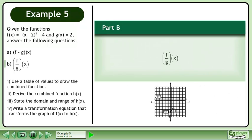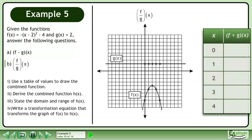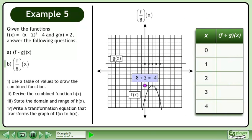In Part B, we'll find the quotient of functions f and g. Divide the y values of the first point to get -4. Record this in the table. Divide the y values of the remaining points and record their quotients in the table.